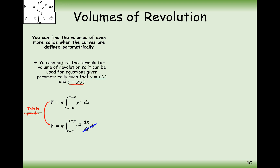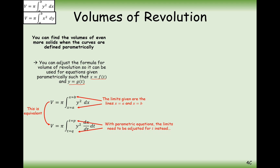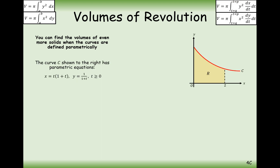You can see why the extra dx/dt is needed: if you cancel out the dt's, you get exactly the same formula as before. Don't forget there are x limits on the original formula, and you need to change those to t limits instead.